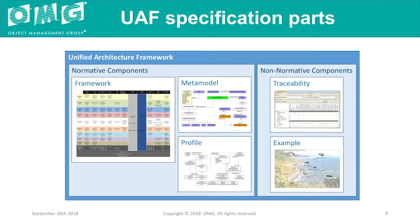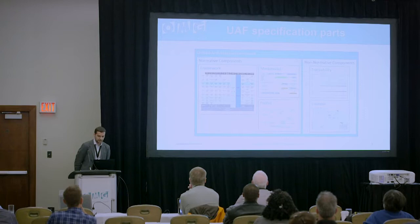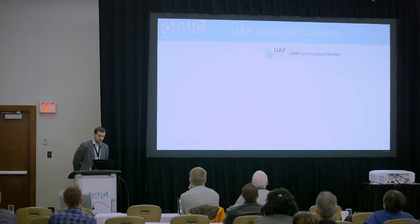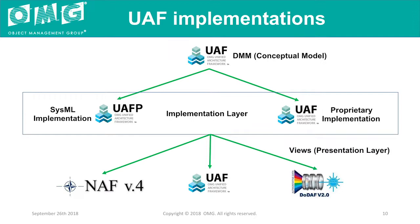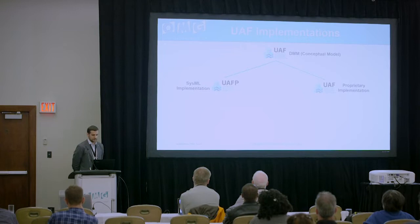Looking at this graphically, we can see normative components of UAF: framework, metamodel, and profile. Non-normative components are traceability to other frameworks and the search and rescue example. Looking at ways to implement UAF: we have the domain metamodel, which can be implemented directly depending on the tool vendors. We also have a standard-based SysML implementation provided as a separate OMG document for tool vendors that support UML-SysML standards. There can also be multiple proprietary implementations in IDEF0 or relational databases.